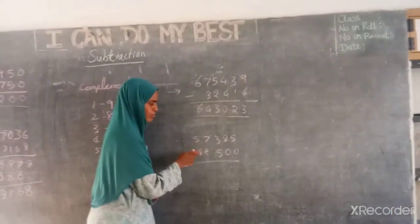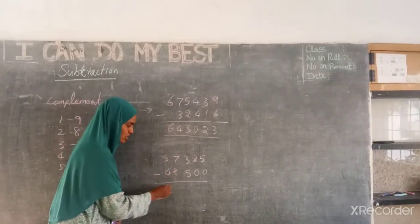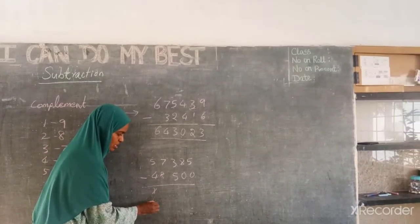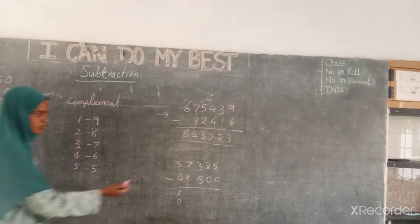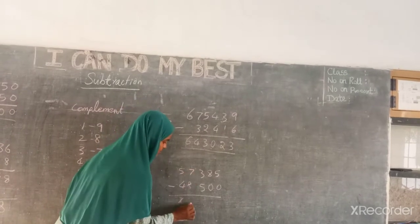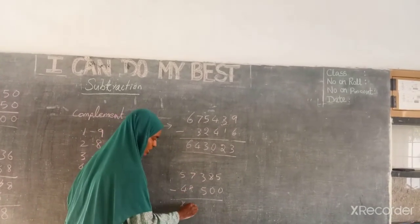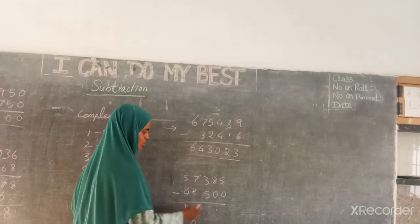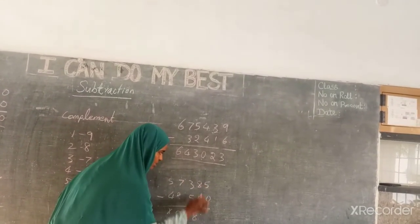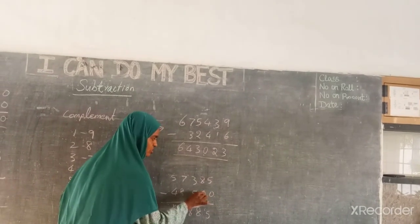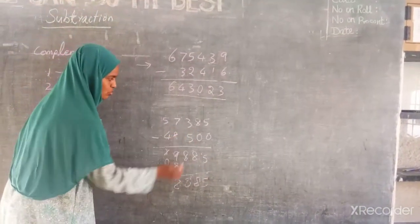Next we subtract again: 5 minus 4 is 1. Then 7 minus 8 — 8 is bigger, so I have to reduce the previous number by 1, this becomes 0, and complement of 8 is 2, so 2 plus 7 is 9. Then 3 minus 5 — again smaller, so reduce by 1, it becomes 8, complement of 5 is 5, so 5 plus 3 is 8. After that there are no more digits, so the remaining digits come as-is. The final answer is 8, 8, 8, 5. You can add the two numbers and check your answer.